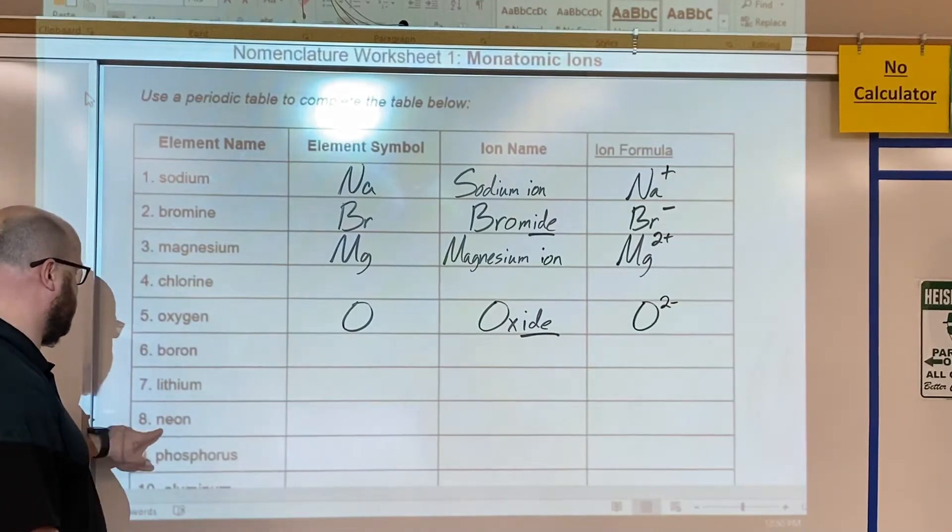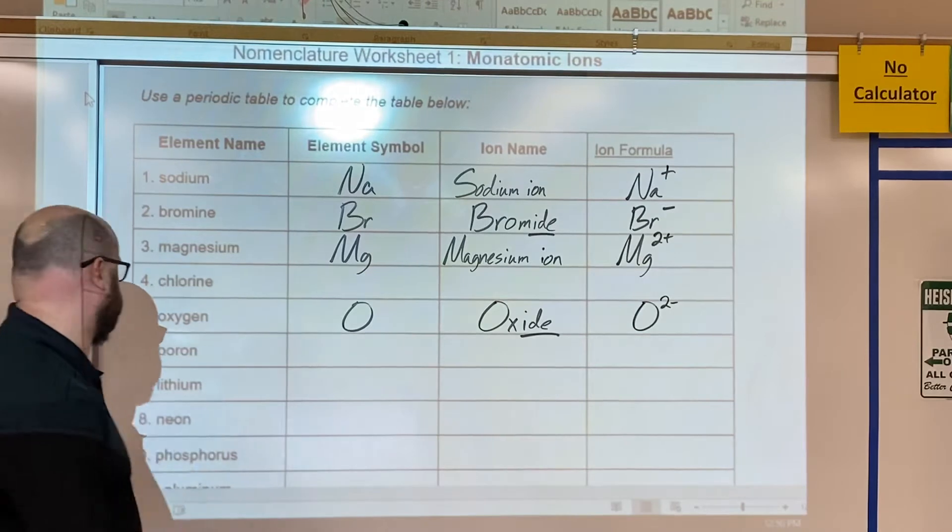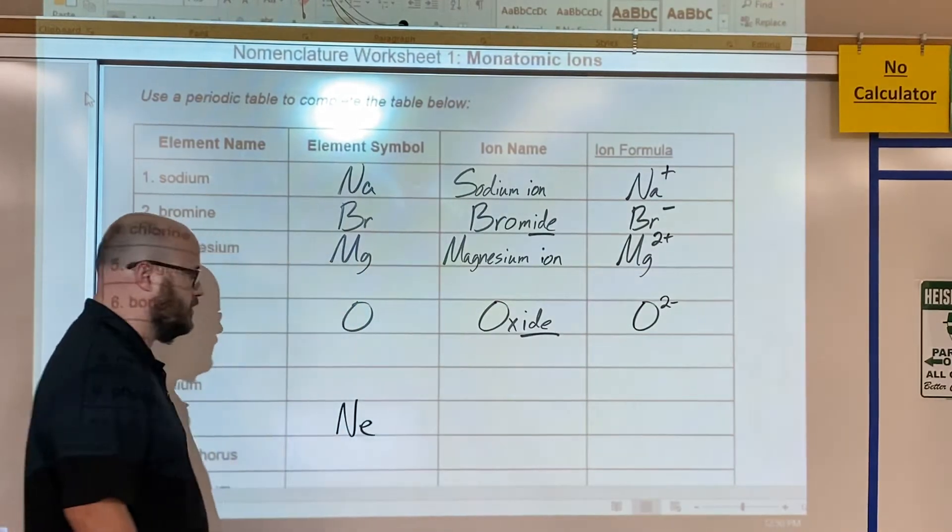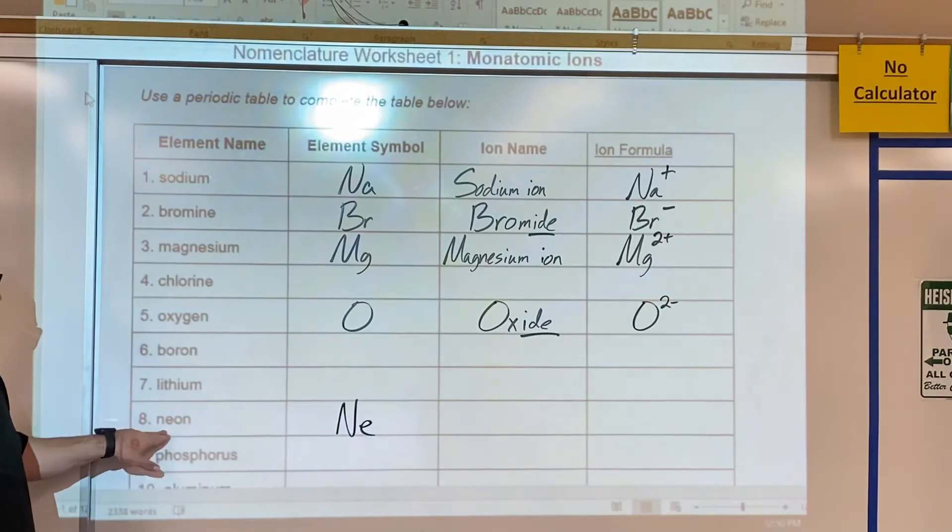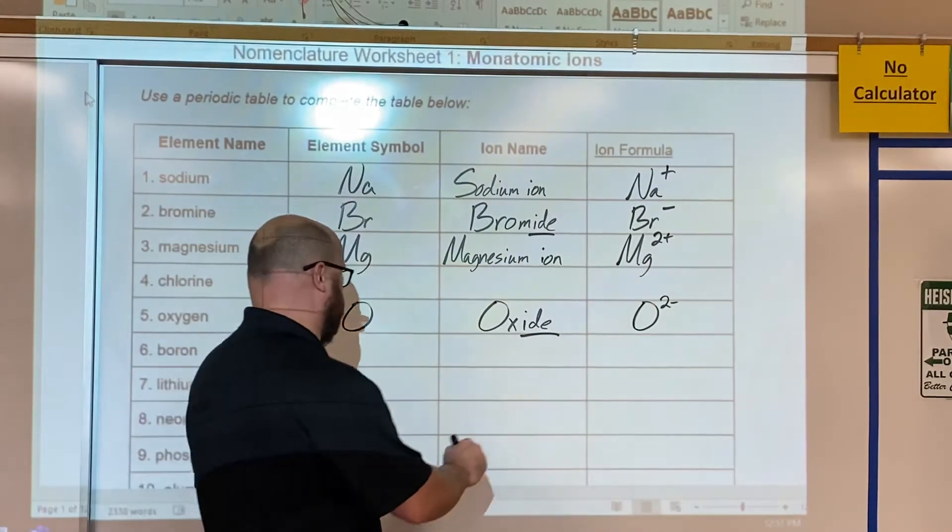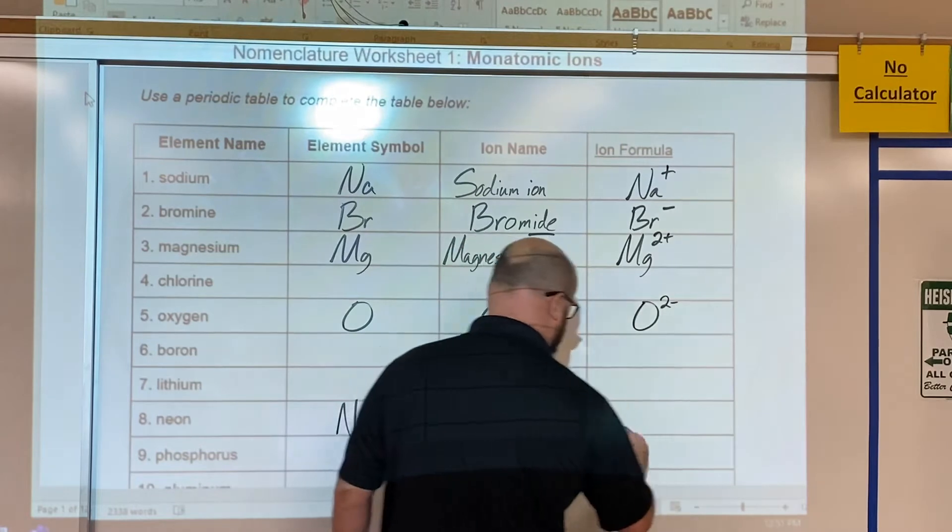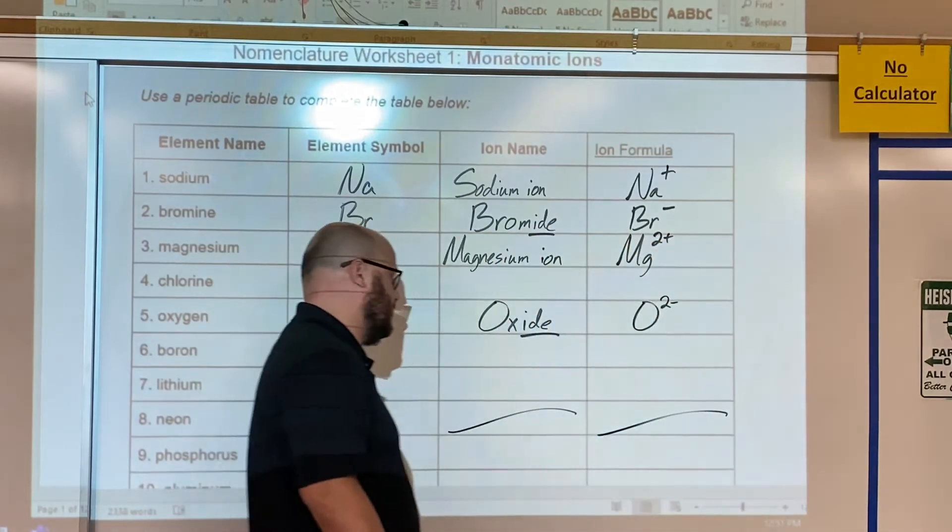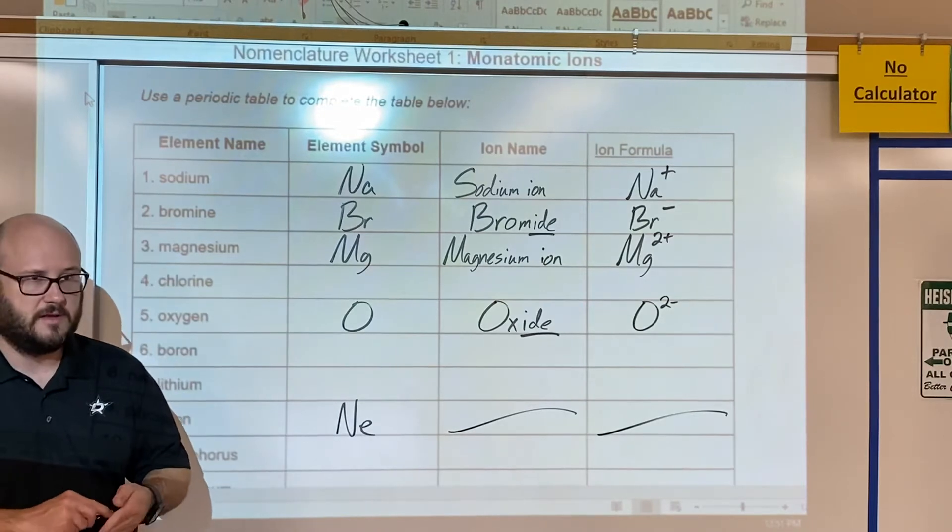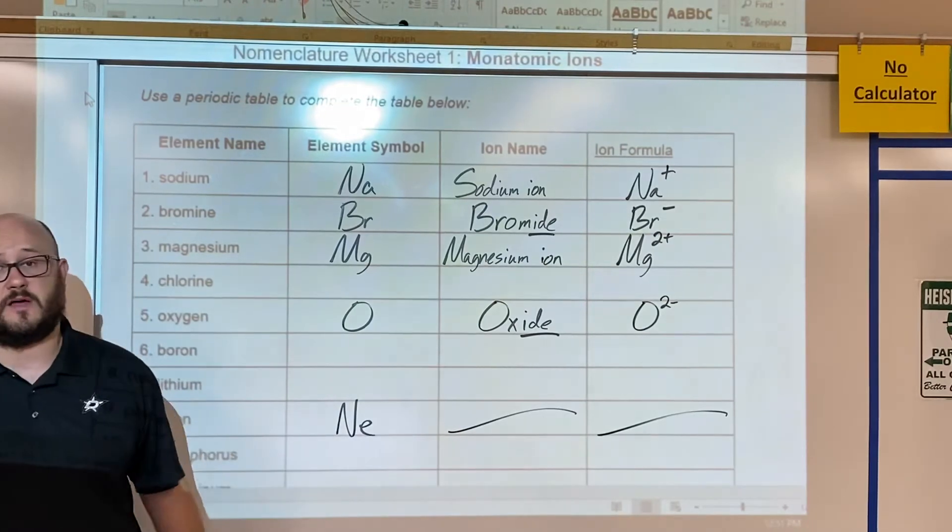What about neon? Neon symbol is Ne. What group number is neon? Neon is in group 8A, the noble gases. So for ion name or ion formula, doesn't exist. Neon's not going to form an ion, nor are any of the other noble gases.